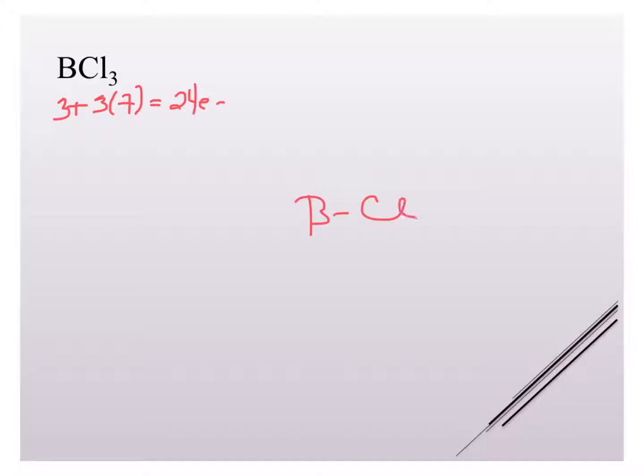So we have boron in the middle and our three chlorines. We've used six electrons. Now we can start filling in our octets around the chlorine atoms.